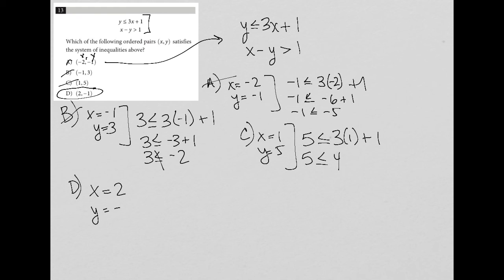Choice D should be the one that works. That tells me that when x is 2, y is negative 1. When I try that, I have negative 1 is less than or equal to 3 times 2 plus 1. 3 times 2 is 6, plus 1 is 7. So negative 1 is less than or equal to 7. That is true.